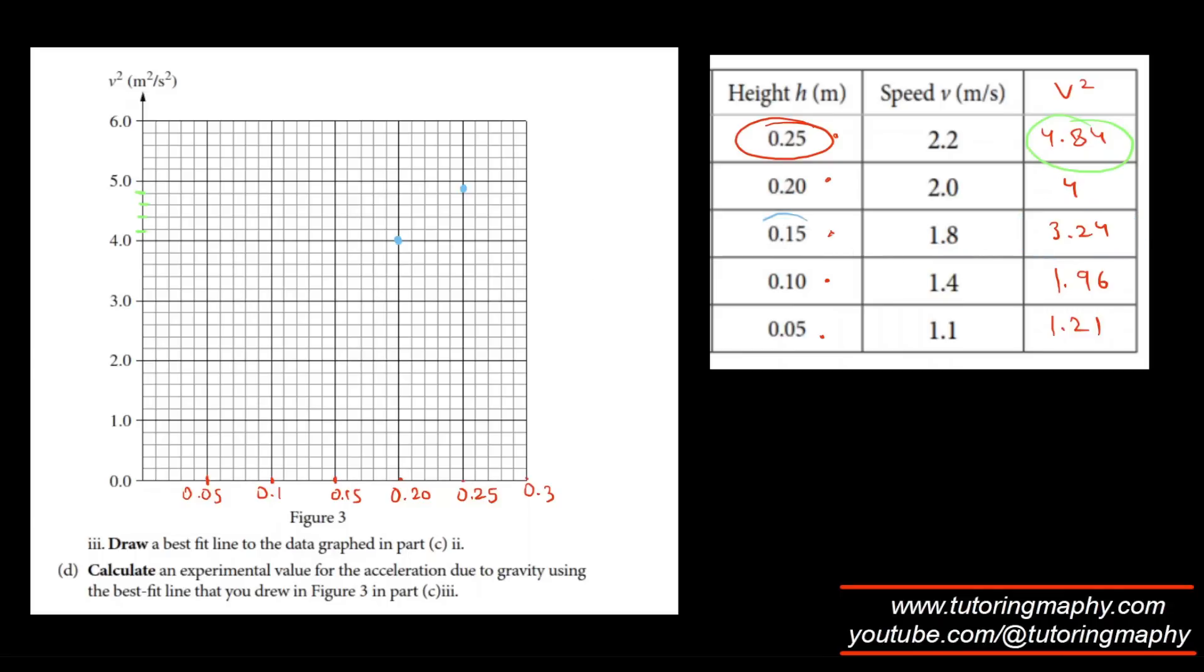Then I have 3.24 on the y and 0.15. 0.15 is somewhere over here, and 3.24—3.2 is somewhere over here, so it should be around this point. The next point is 0.1 and 1.96. 1.96 is around 2, and 0.1 is over here, so that's somewhere over here. This is 1.2 and 0.05. 1.2 is this and 0.05 is here.